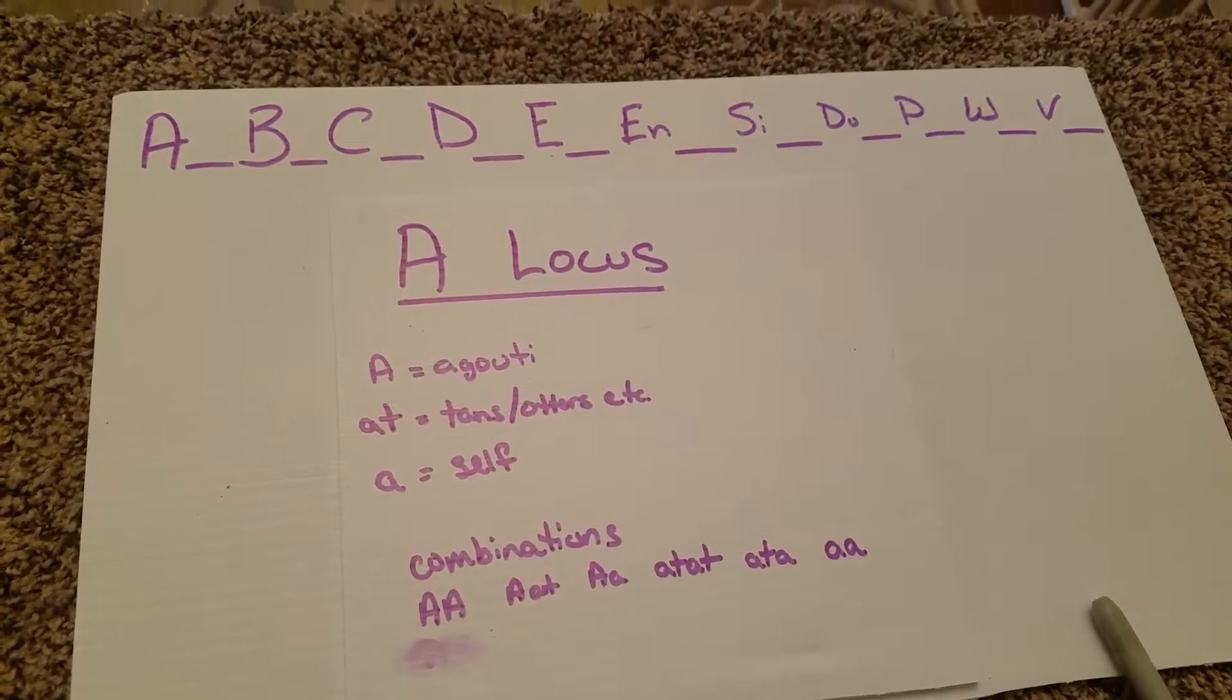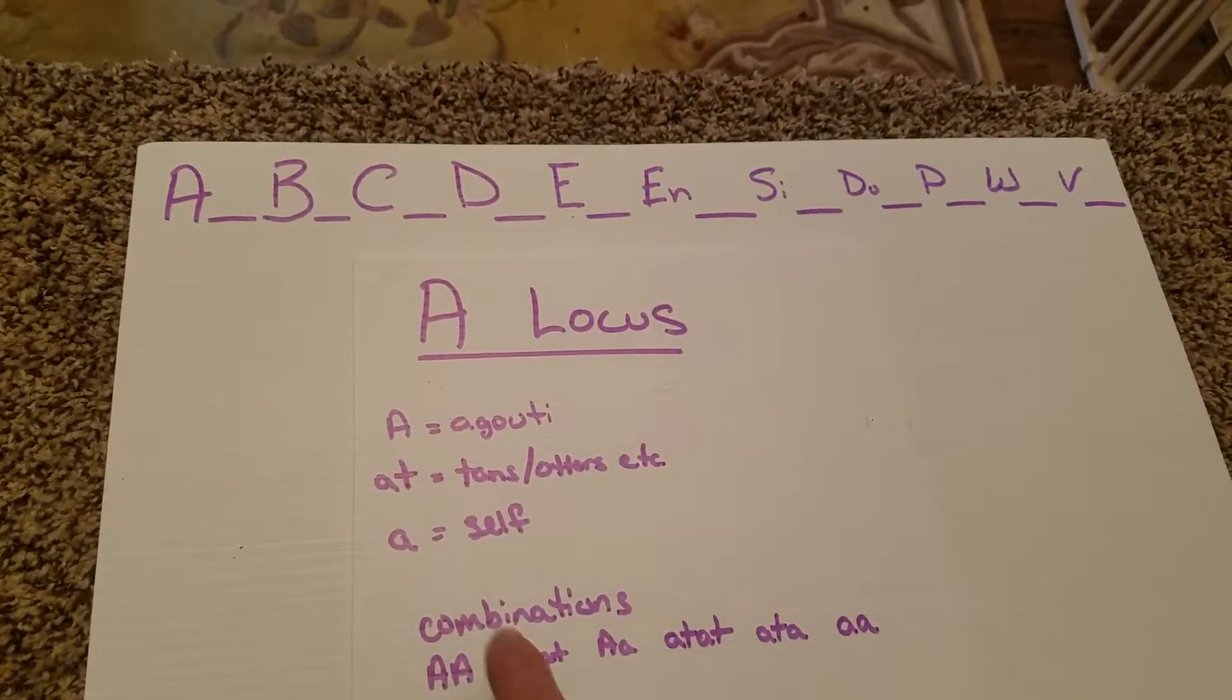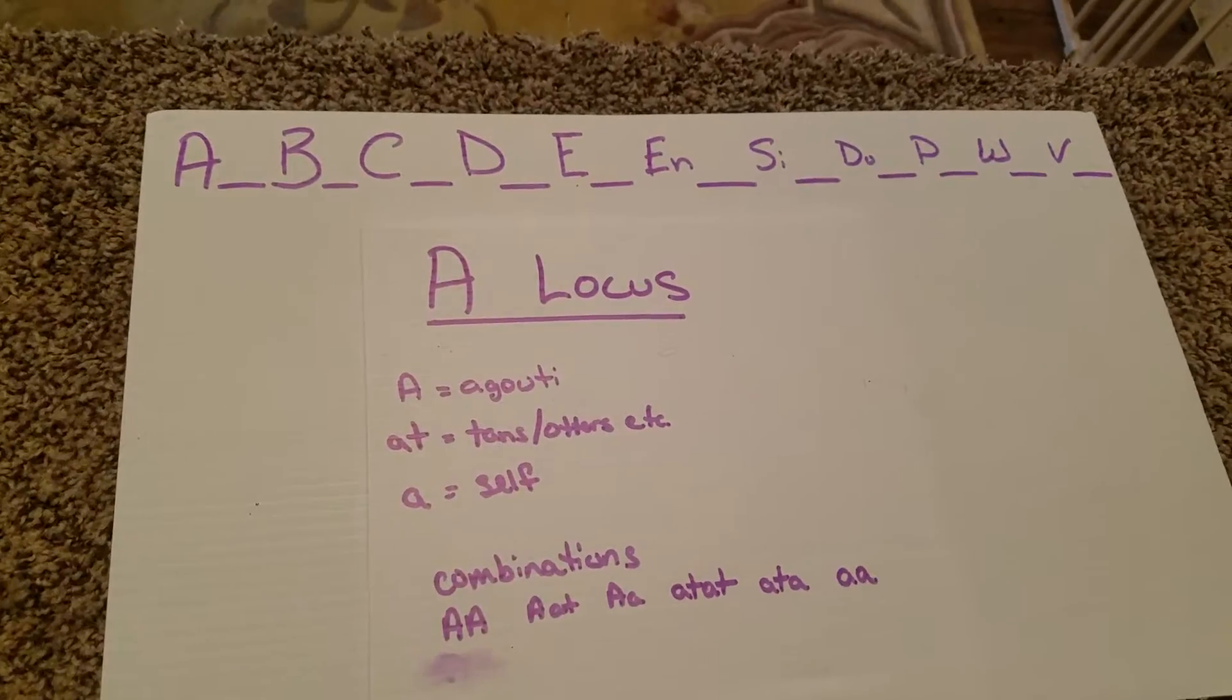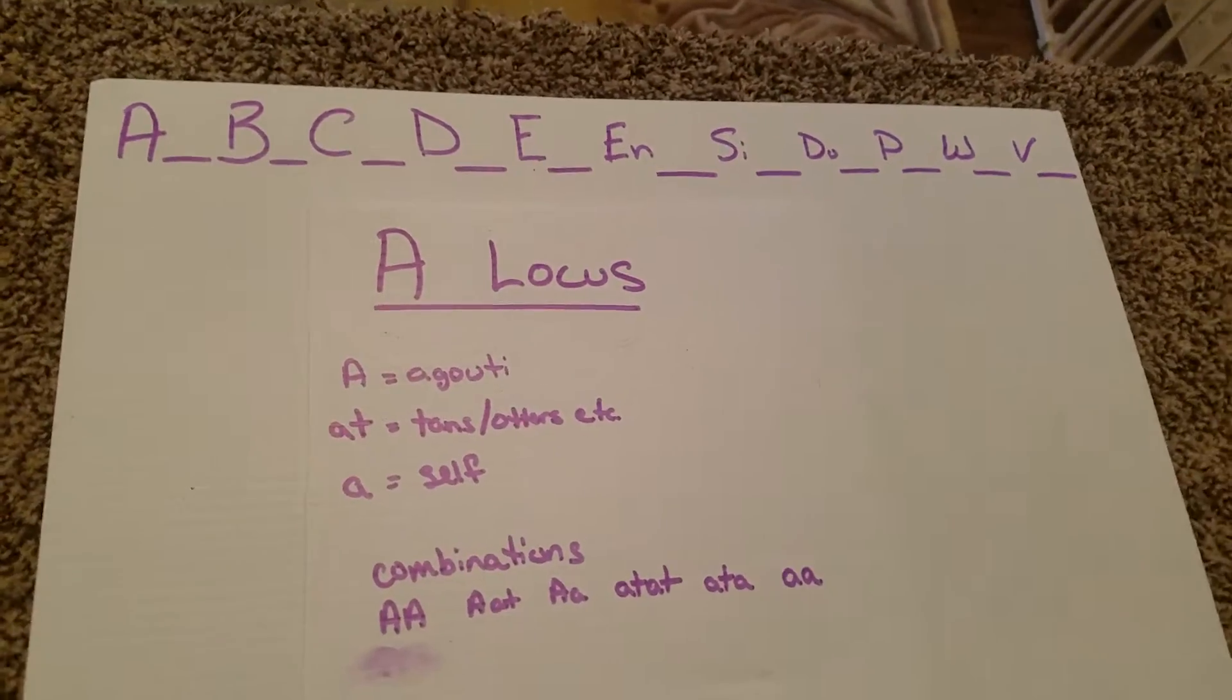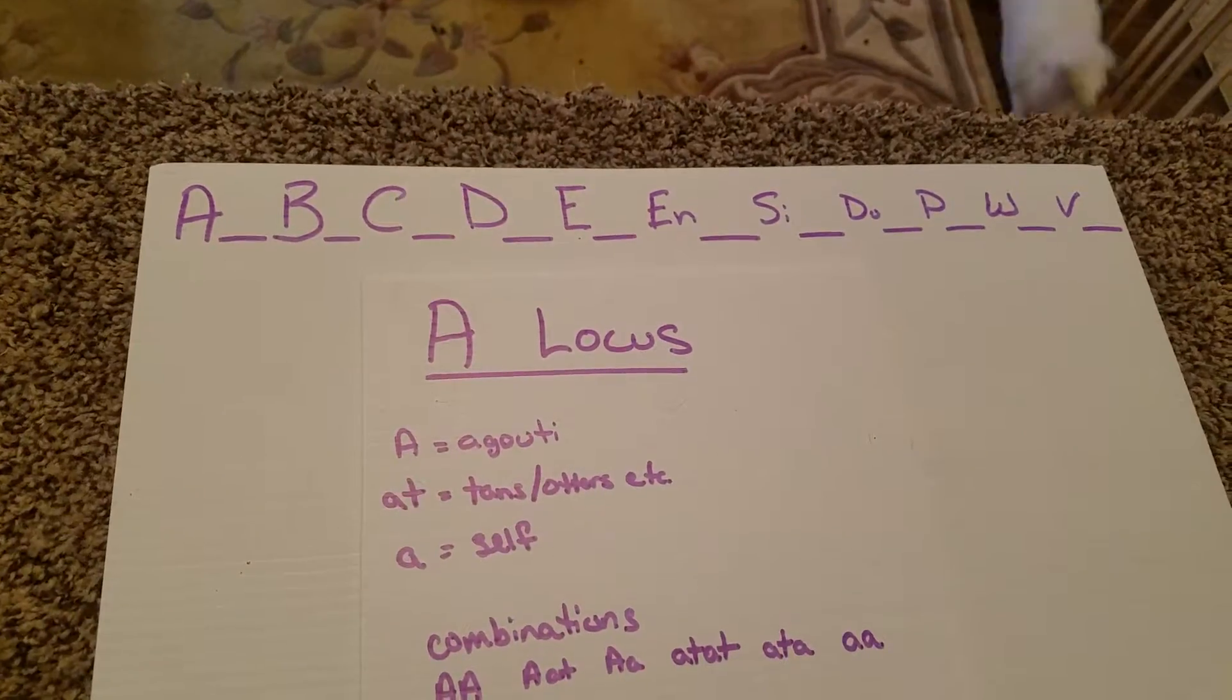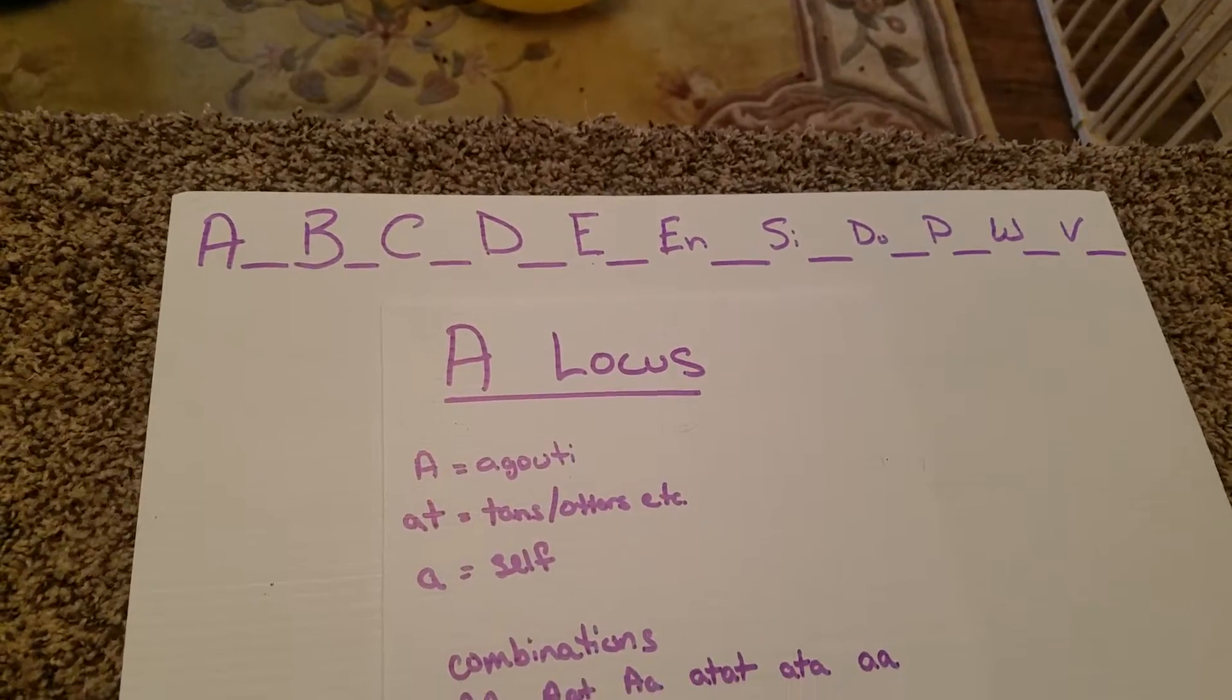It has three different possible genes that can be part of the A locus. We have a capital A which is going to stand for our agouti pattern. Agoutis are generally going to be presented in your colors such as chestnut, chinchilla.